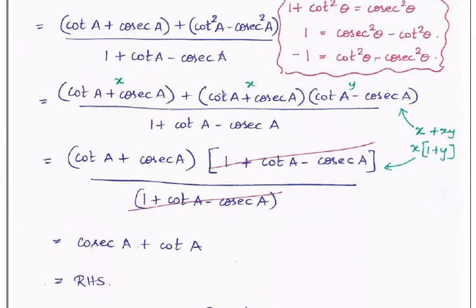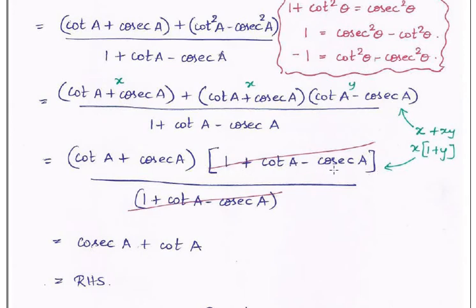In the numerator, treating (cot·A + cosec·A) as a common factor x, we factor it out: x(1 + y) where y = cot - cosec. In the denominator, the (cot·A + cosec·A) factor also appears and can be taken common, giving the same (1 + cot·A - cosec·A) bracket in both numerator and denominator. These cancel completely, and we are left with cot·A + cosec·A, which equals the RHS: cosec·A + cot·A. Hence proved.